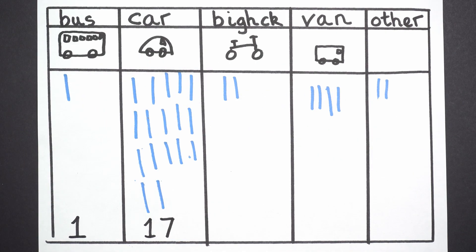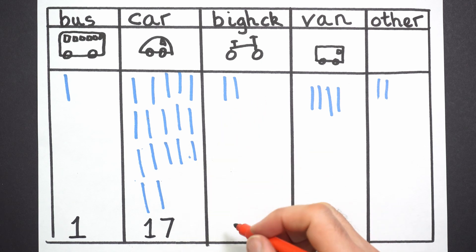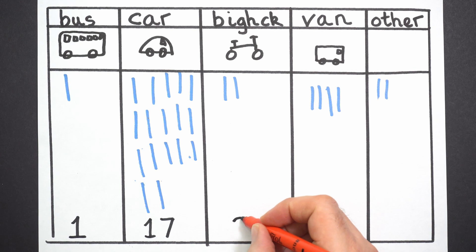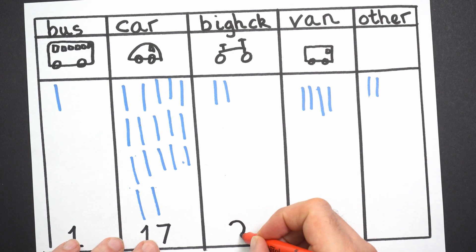How many bikes were there? Can you count? One, two. Going to write two. Can you do this on your tally chart as well?